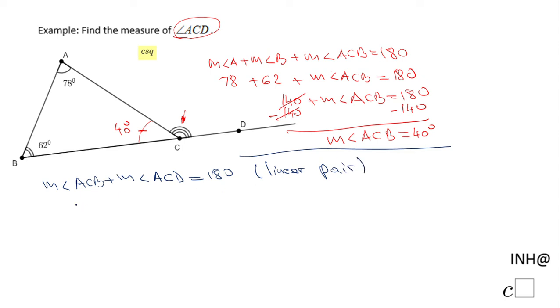And ACB, the measure of angle ACB is 40 degrees. And for finding ACD, we're going to subtract 40, and we end up with the measure of angle ACD equals 140 degrees.